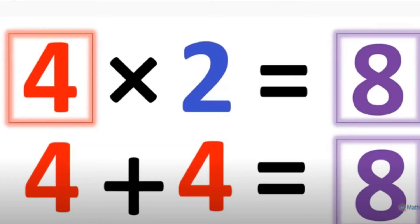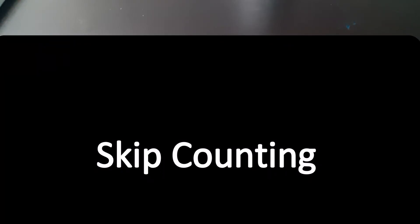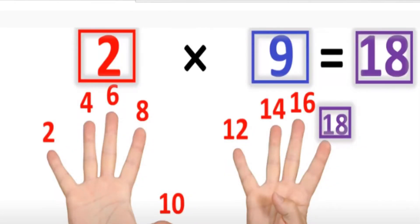If you forget your basic addition, there is a backup method. That's the skip counting method. If you take 9 times 2 or 2 times 9, you still count by the number 2, 9 times. So, 2, 4, 6, 8, 10, 12, 14, 16, 18. So, stop by 18. Very easy, right?